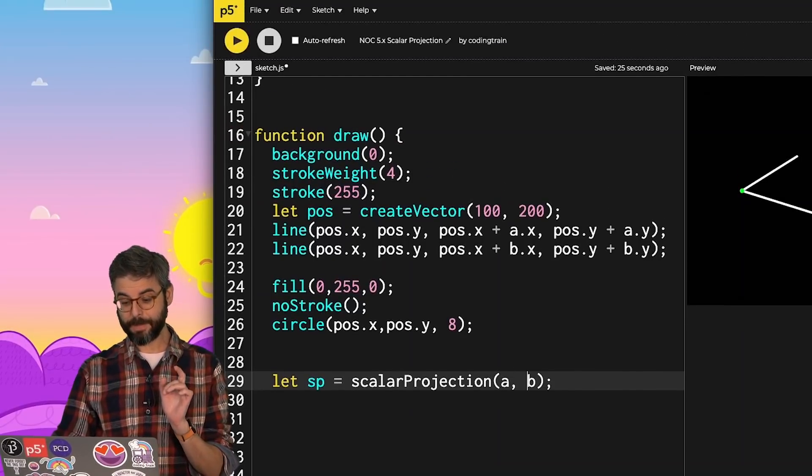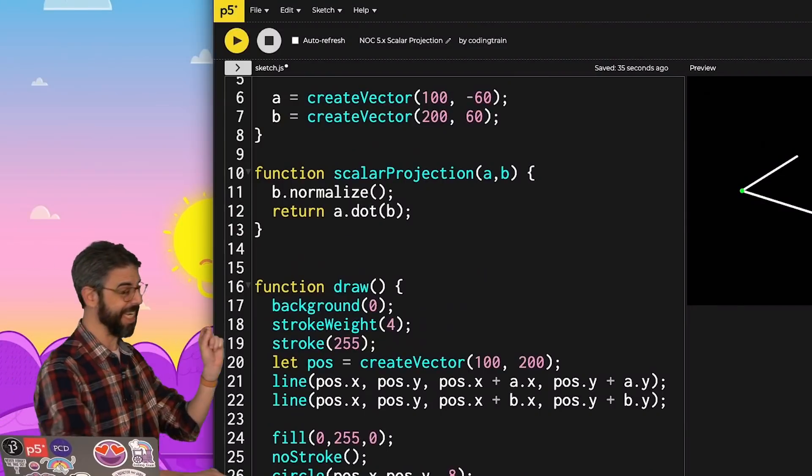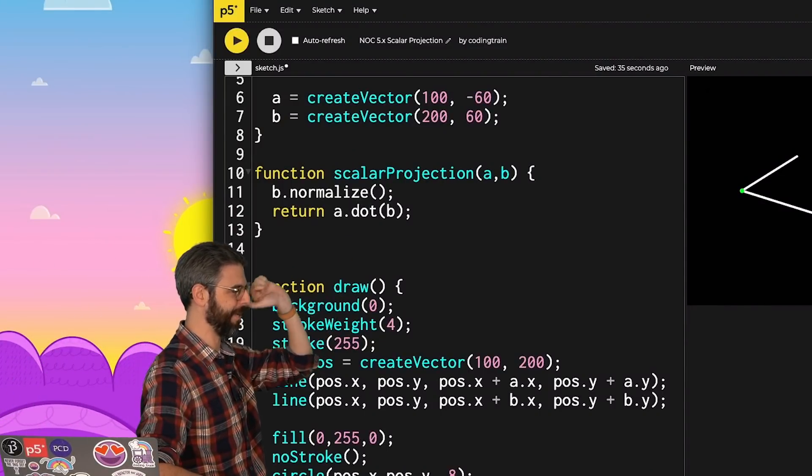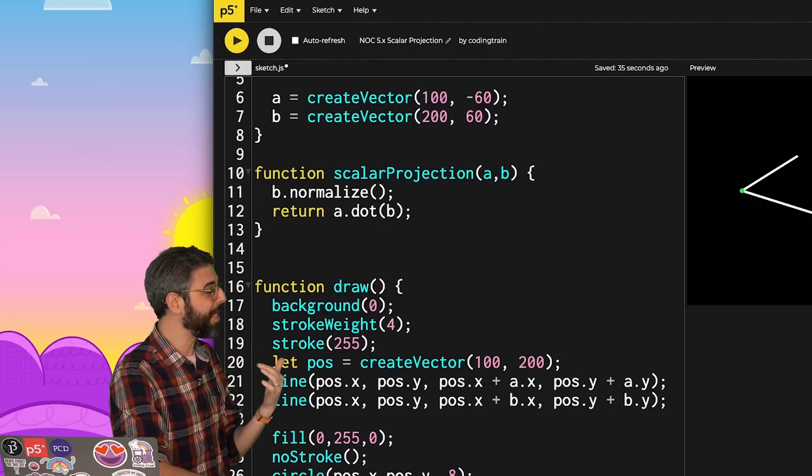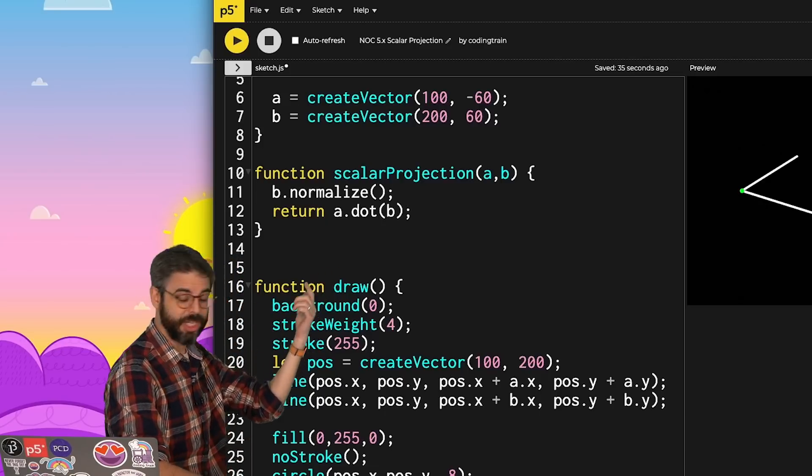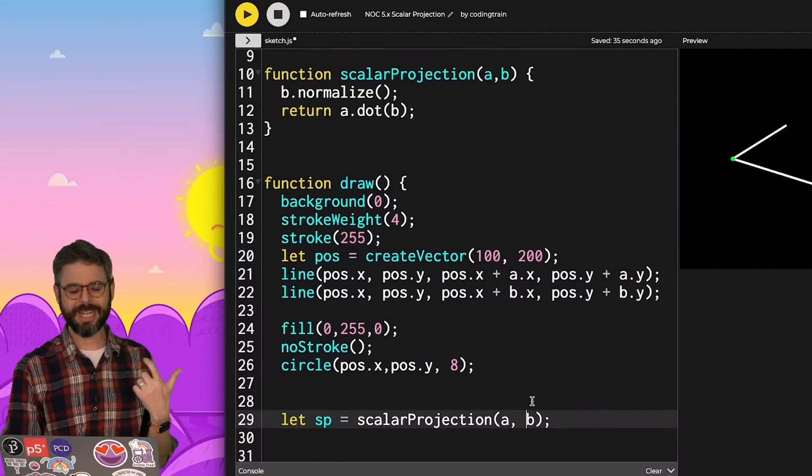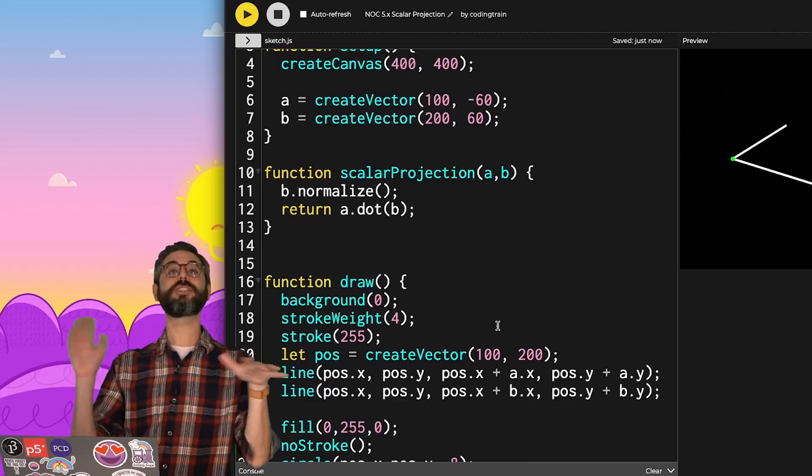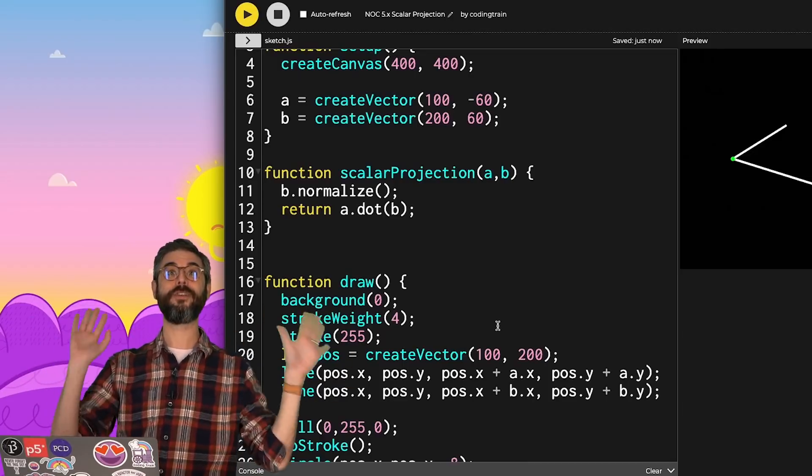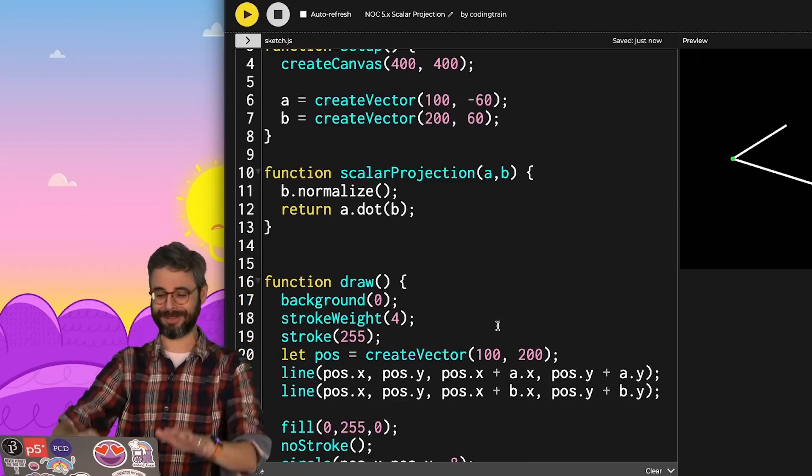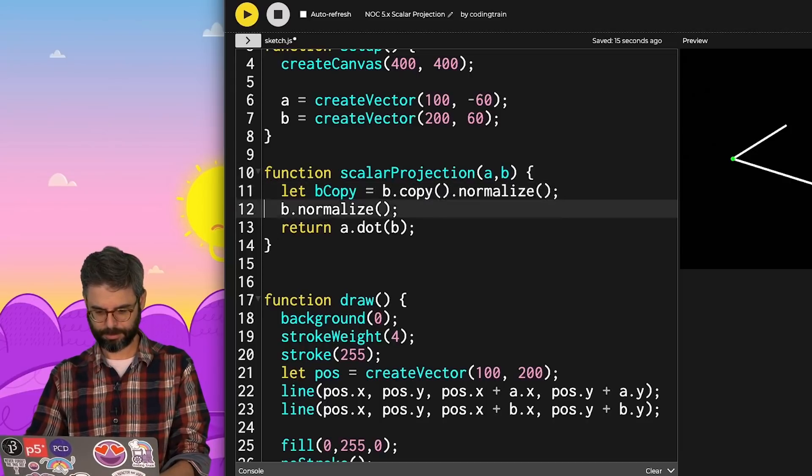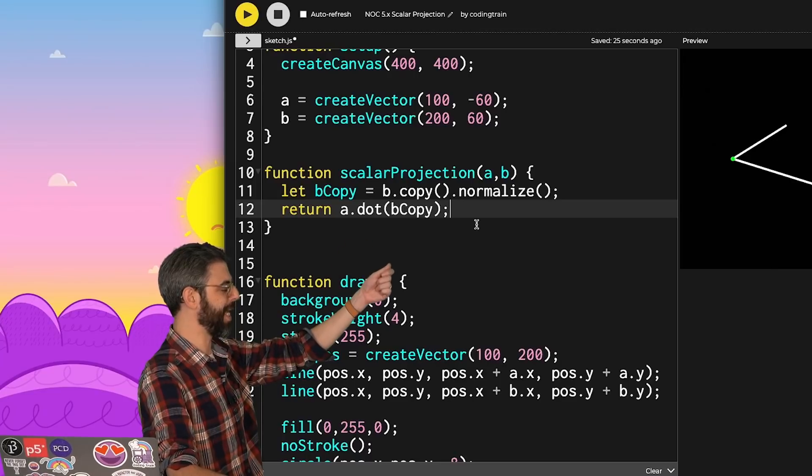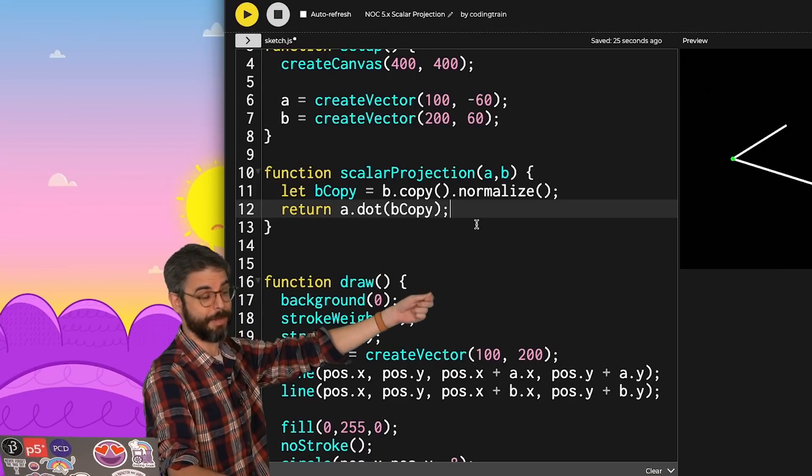Now let me call that function with A and B. I have to be careful because this function is altering the vector B by normalizing it. Is it better to make a copy of it in the function or to call it with making a copy here? I think I'll make a copy in the function because that way whoever is calling the function doesn't have to worry. The function will protect you from yourself. So I'll write it as one line: copy the vector, normalize it, and then return A dot the copy of B.